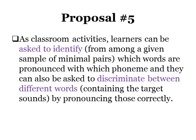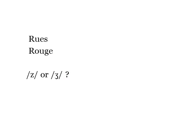As classroom activities, students can be presented with a sample of minimal pairs and asked to identify which words are pronounced with which phoneme. They can also be asked to discriminate between different words by pronouncing them correctly. For example, students can be presented with the minimal pair 'ruse' and 'rouge' and asked which word is pronounced with the phoneme /z/ and which with the phoneme /ʒ/.